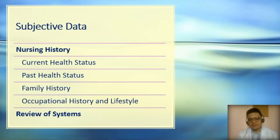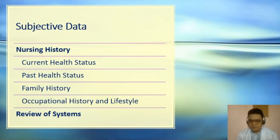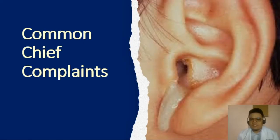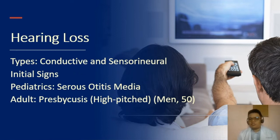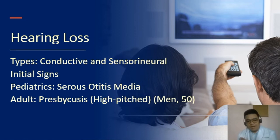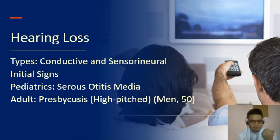For assessment, subjective data focuses on current health status, past health status, family history, occupational history and lifestyle, and review of systems. Common chief complaints in ear problems include hearing loss, which has two main types: conductive and sensorineural (with a third mixed type). An early sign of hearing loss is increasing the TV volume while others find it too loud. The most common cause in children is serous otitis media; in adults, it is presbycusis.